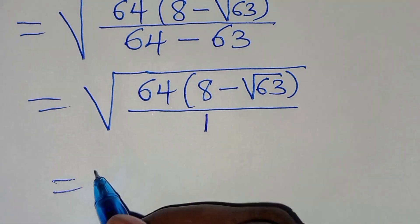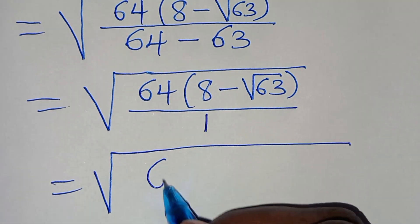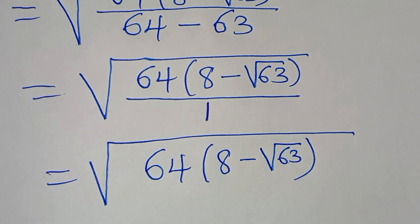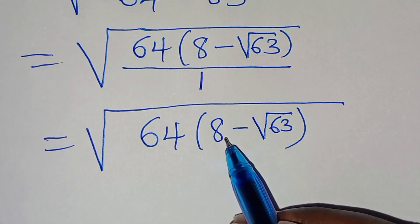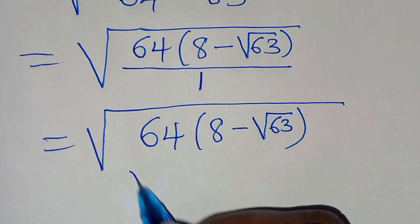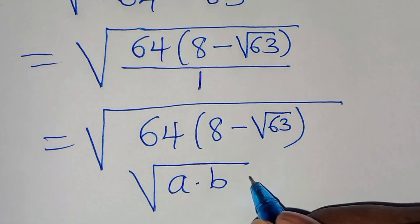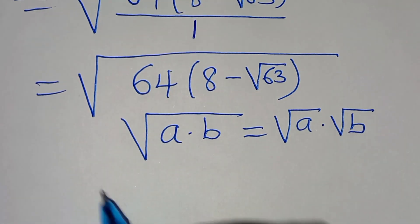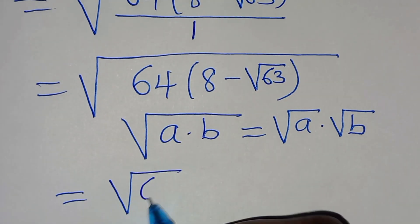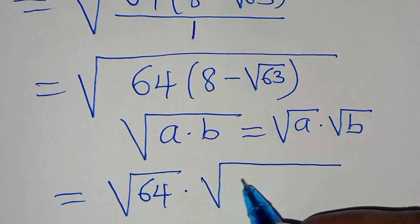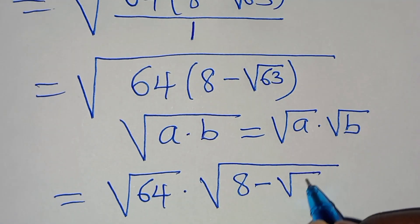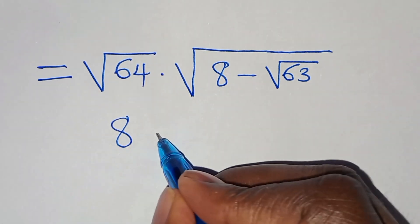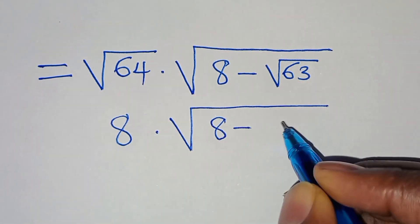So this implies that here we have square root of 64 multiplied by 8 minus square root of 63, all divided by 1. Now square root of 64 equals 8, so we have 8 multiplied by 8 minus square root of 63.